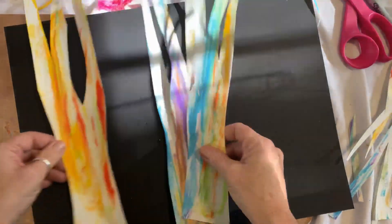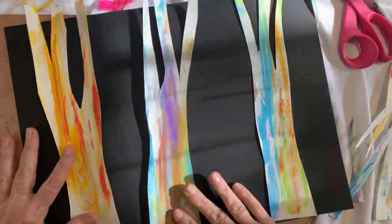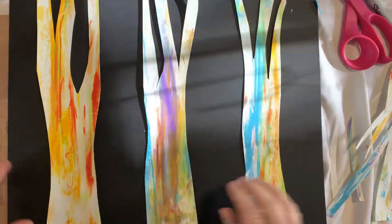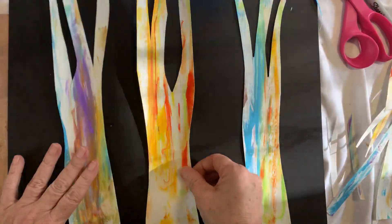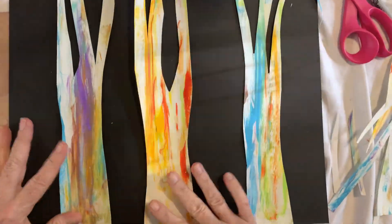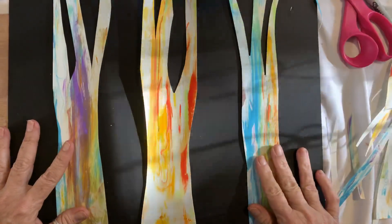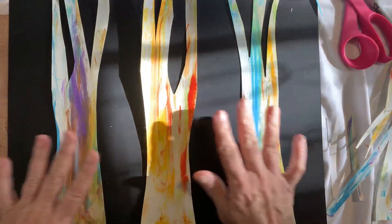So I'm going to arrange them the way that I like. Kind of like it like this, maybe. Let's see how that would look. Yeah, I like it better like this because I like the fat one in the middle. It gives it a nice balance and a nice composition.